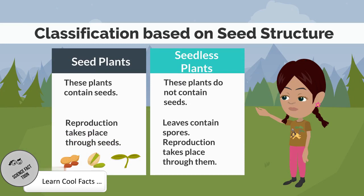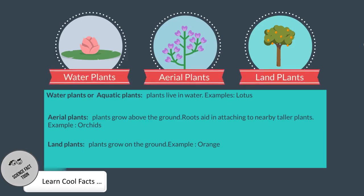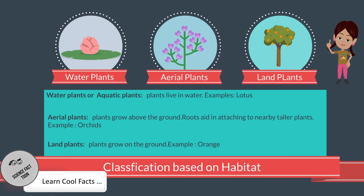Example: mosses. Classification based on seeds. Seed Plants: These plants contain seeds and reproduction takes place through them. Example: mango. Seedless Plants: These plants do not contain seeds. Leaves contain spores that help in reproduction. Example: ferns, mosses.